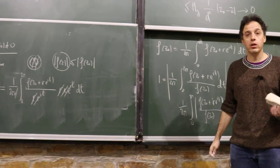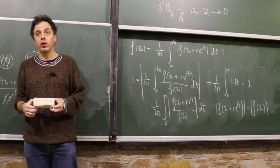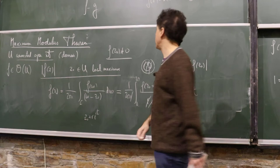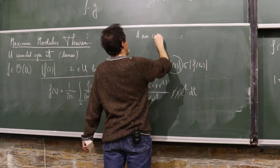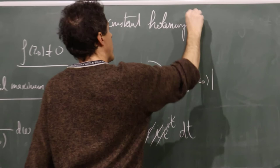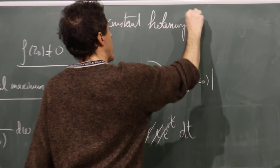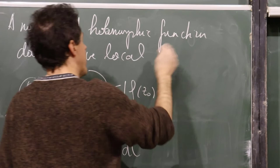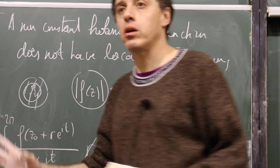By the Cauchy–Riemann equations, if a holomorphic function has constant modulus in a neighborhood, it must be constant. If it is constant in a neighborhood, by the identity theorem it is constant everywhere. So the maximum modulus theorem states: a non-constant holomorphic function cannot have a local maximum of its modulus.